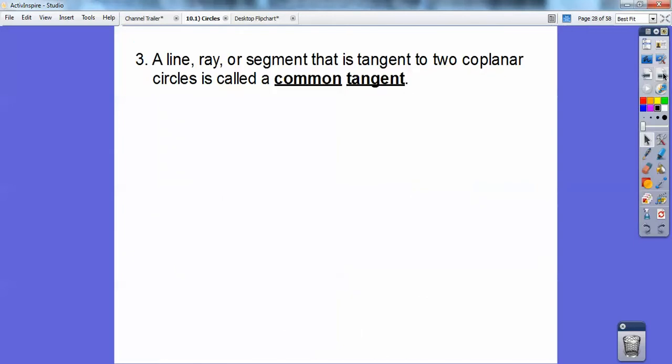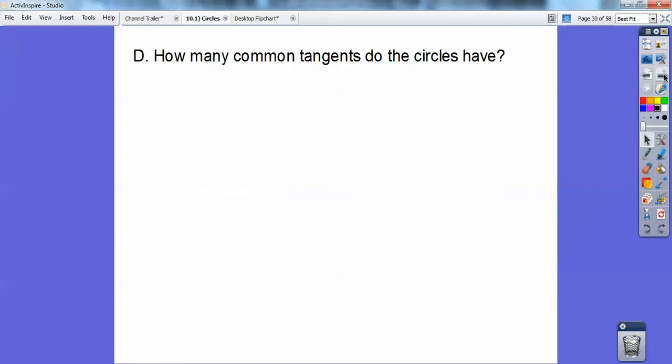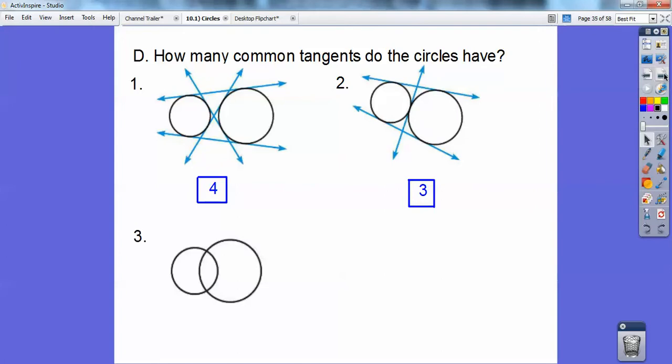Tangent circles: a line, a ray, or segment that is tangent to two coplanar circles is called a common tangent. So this line is tangent to this big circle and this little circle. This line is tangent to both these circles, so it's called a common tangent. So how many common tangents do the circles have? Pause it and just think. I see four of them. There they are. How about this one? I see three of them. How about this one? I see two of them. Can you guys think of circles that don't have any? How about circles that have just one?